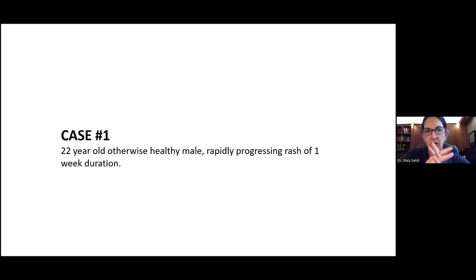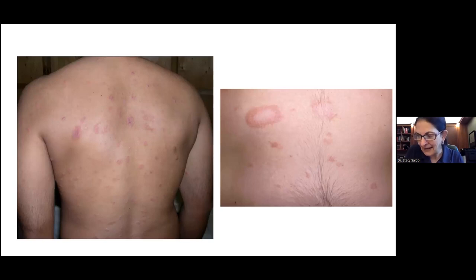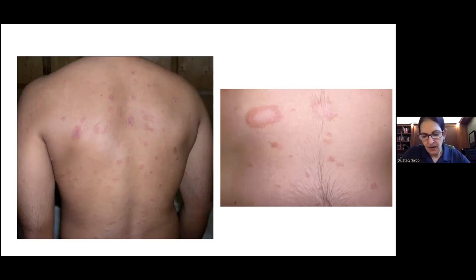This is our first case — a 22-year-old man, otherwise healthy, with a rapidly progressing rash of just one week's duration. This is my all-time favorite rash — it was the first dermatology diagnosis I ever made. My then-boyfriend, now-husband had this rash during medical school, and I thumbed through that atlas until I found the picture that looked like his rash. I was wondering if any of you would like to take a stab at describing this rash.